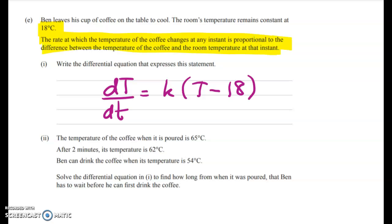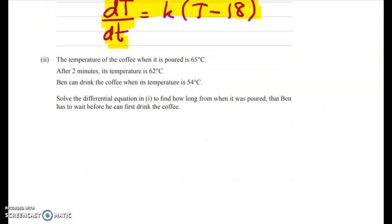Okay, so we get the following DE that I've already written in, and now we have to solve it and then substitute in some known values. So the first important one is that when t is zero, the coffee temperature is 65. When t is two, it's 62, and we have to figure out when it will be 54 degrees.